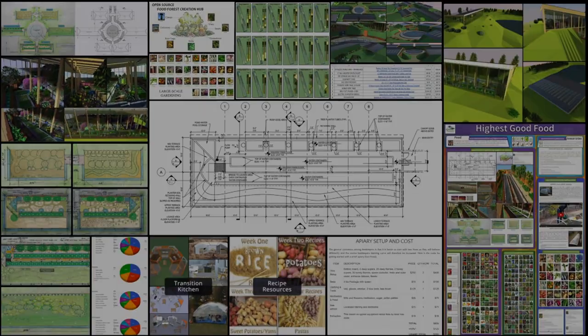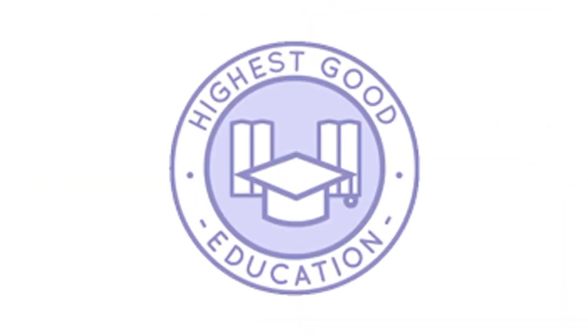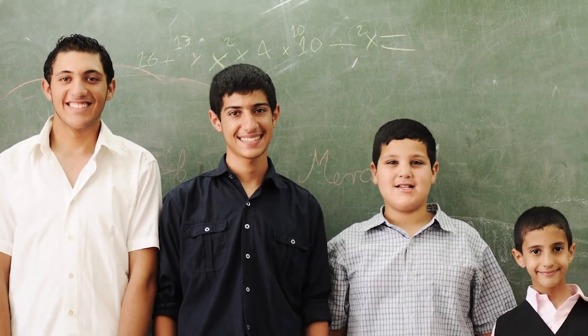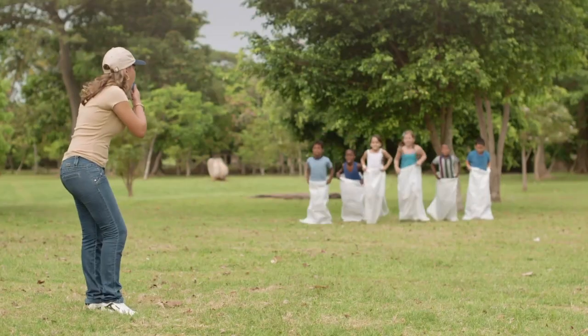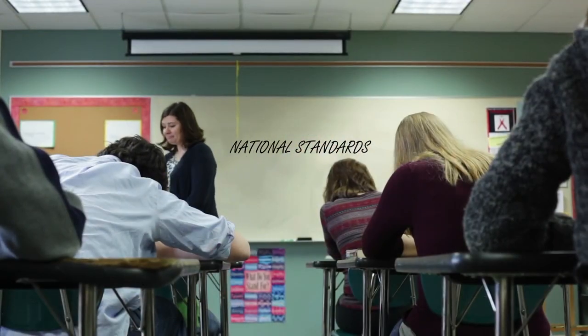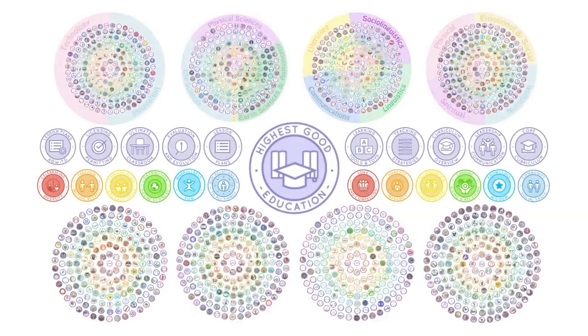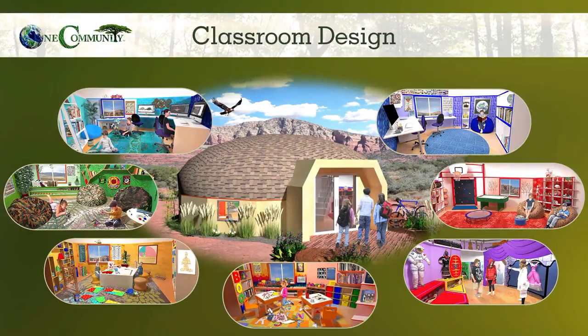The next component is highest good education. This component is complete and pretty much ready to launch once we're on the project. One Community's approach to highest good education is designed for all age groups, adaptable to any schooling environment, inspiring and fun for all participants, and includes national standards, all subjects, lesson plans, teaching strategies, learning strategies and tools, classroom design, and more.